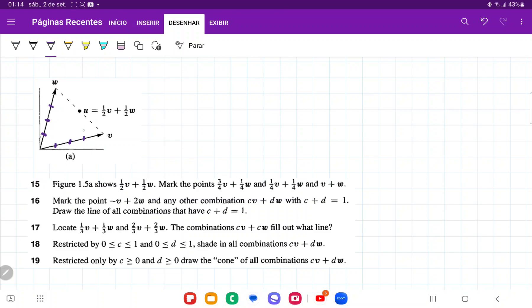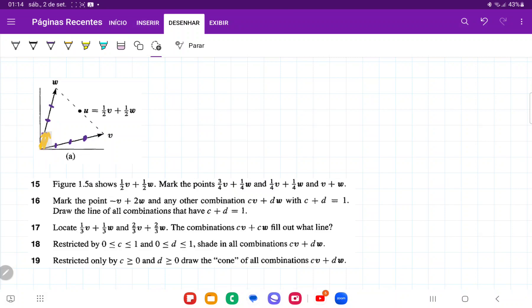So I've cut these into quarters, and this is my point here, 3 quarters v. And then we want to add 1 quarter w to it. So this is my 1 quarter w, that's my length. And then I'm just going to move this and place it here.